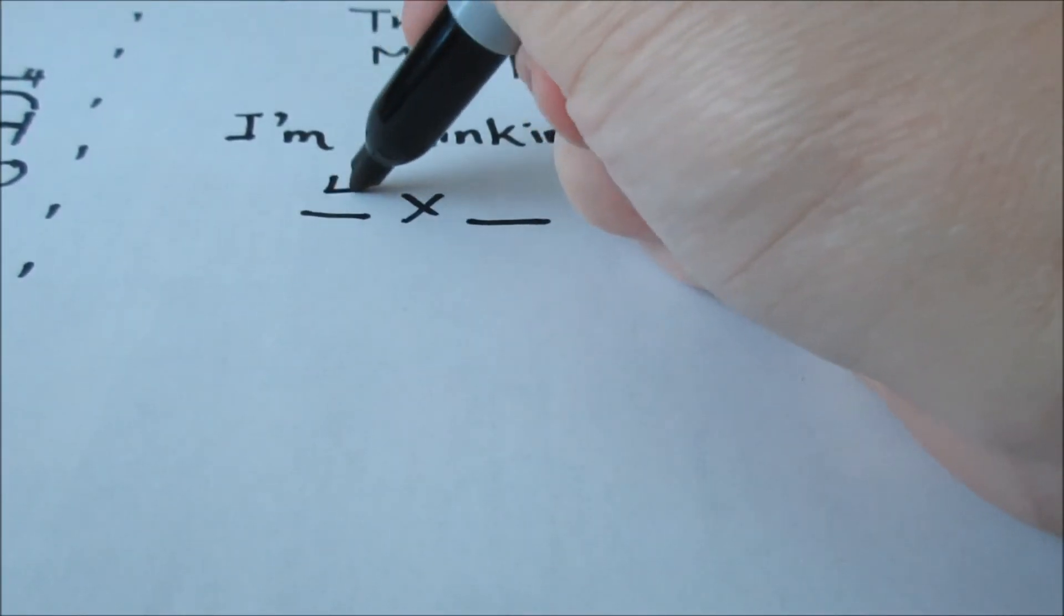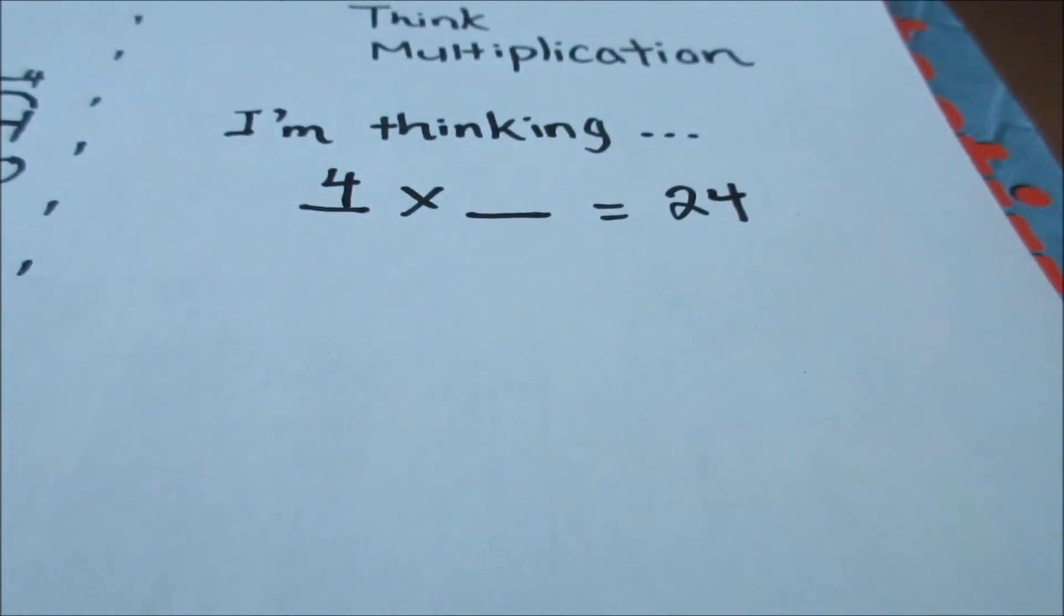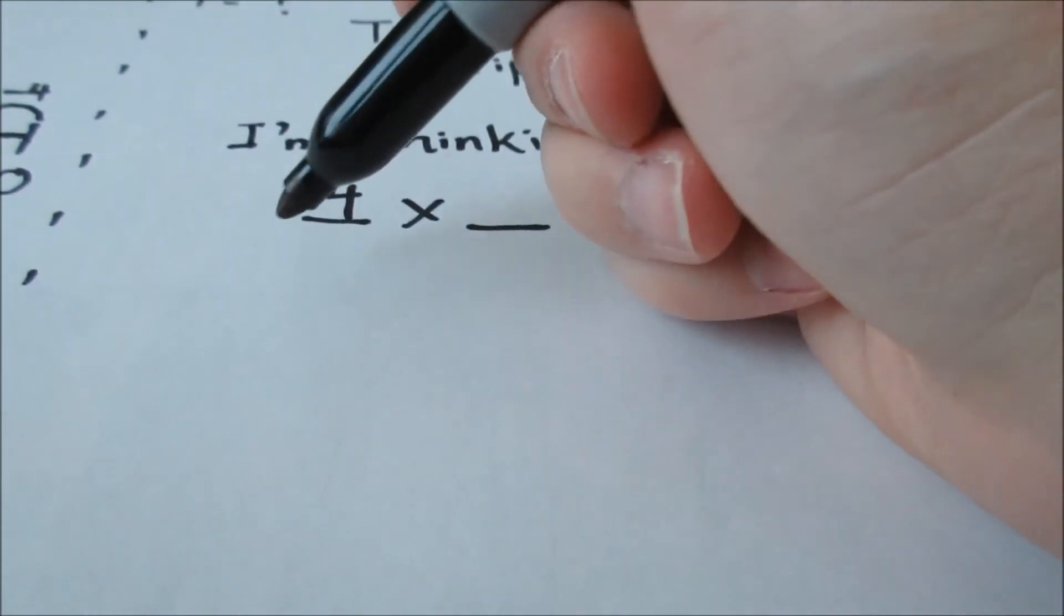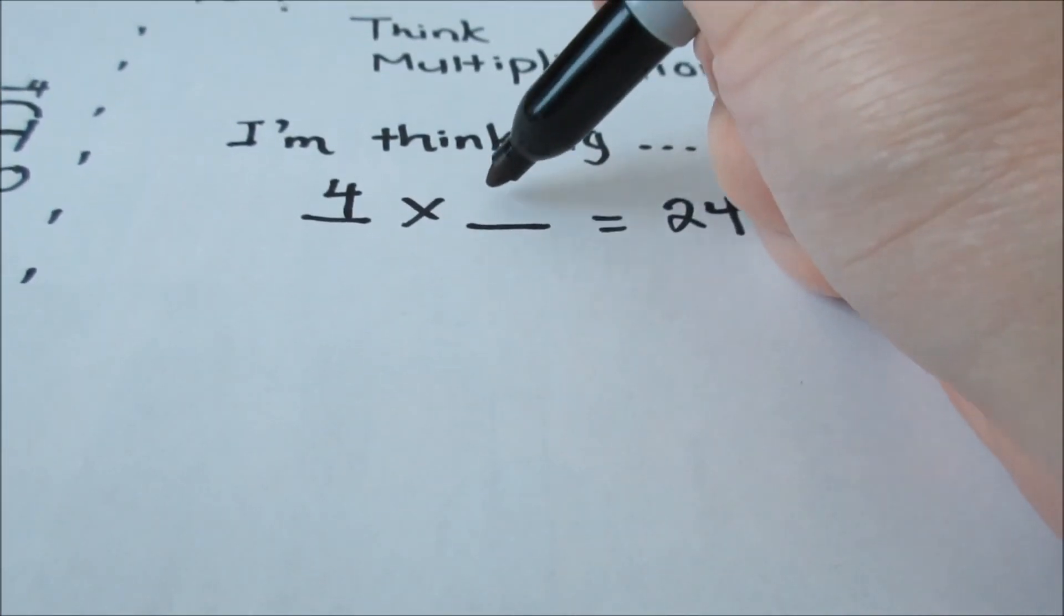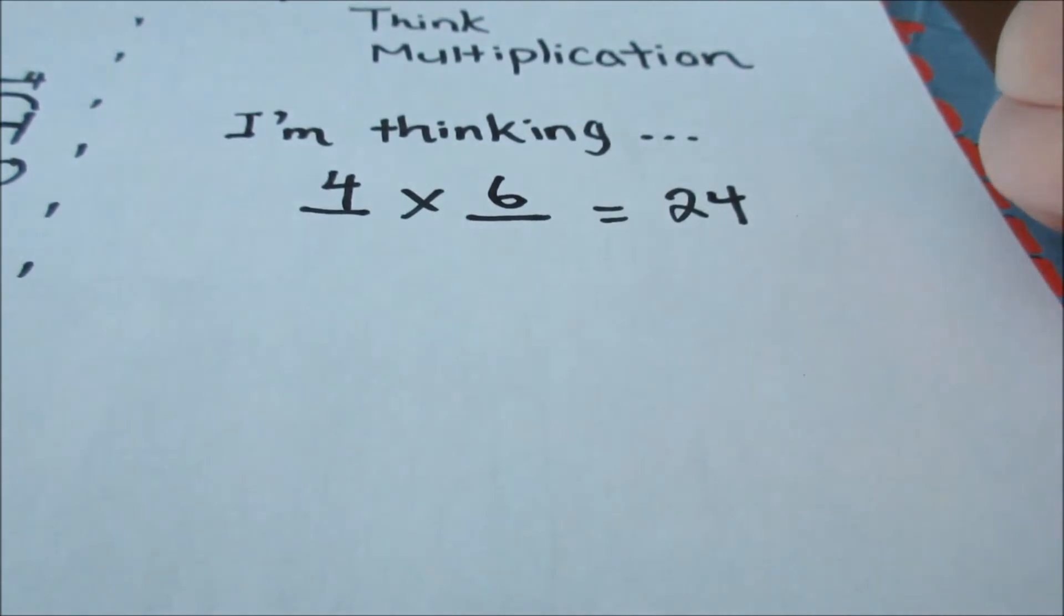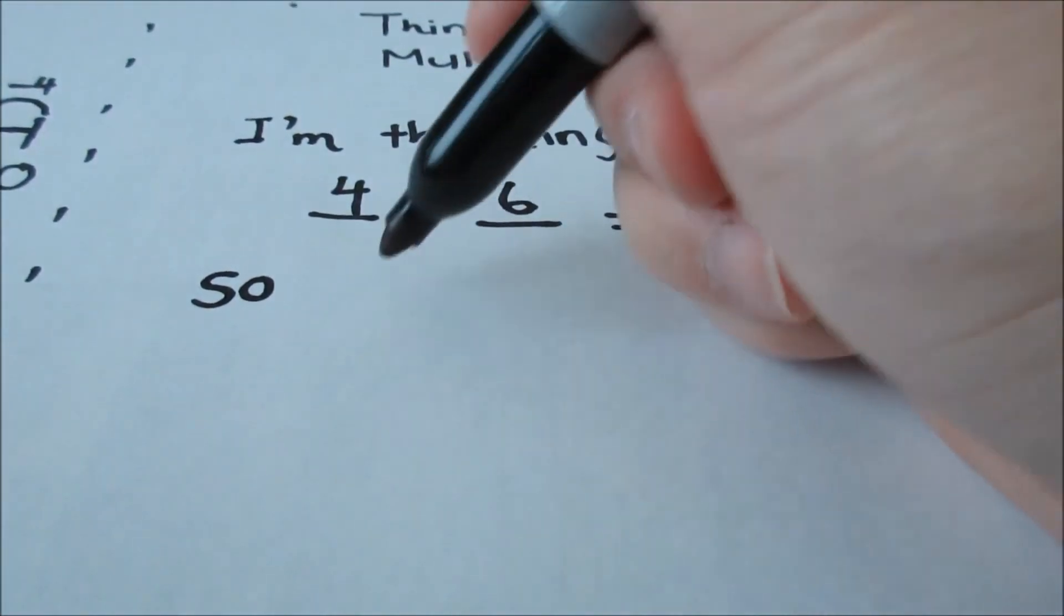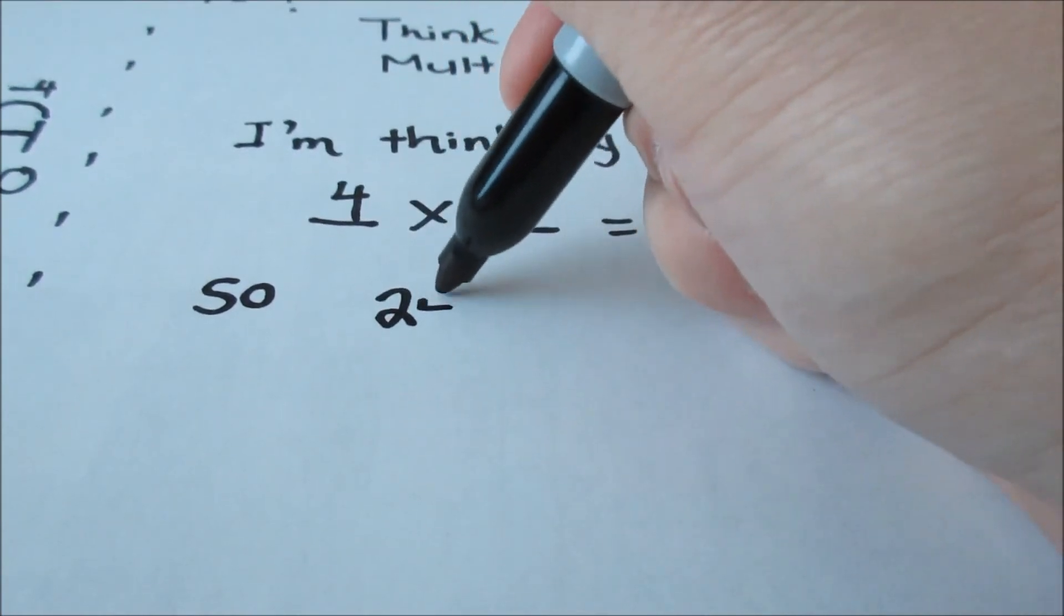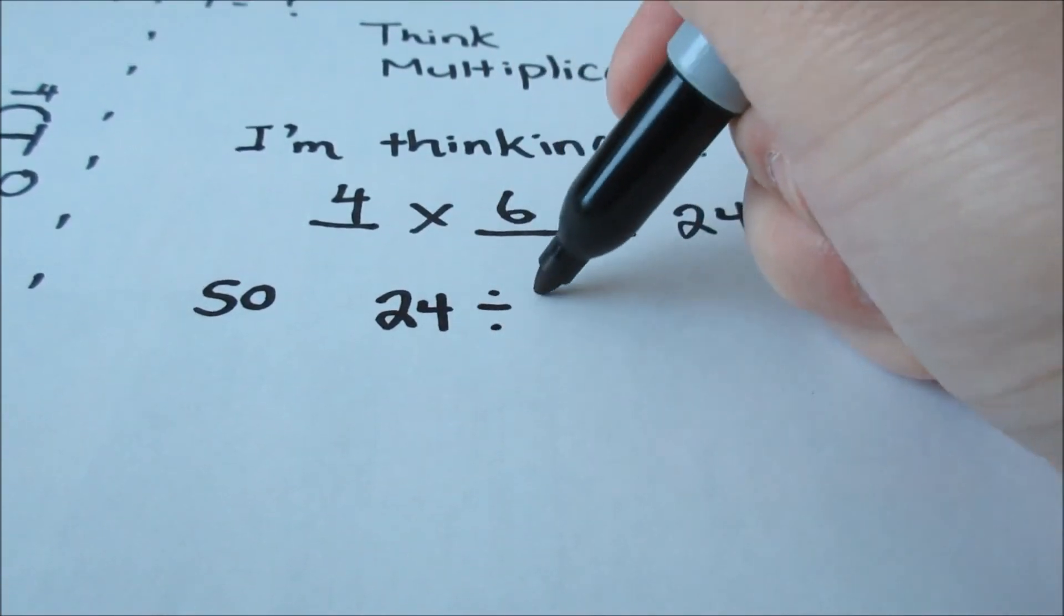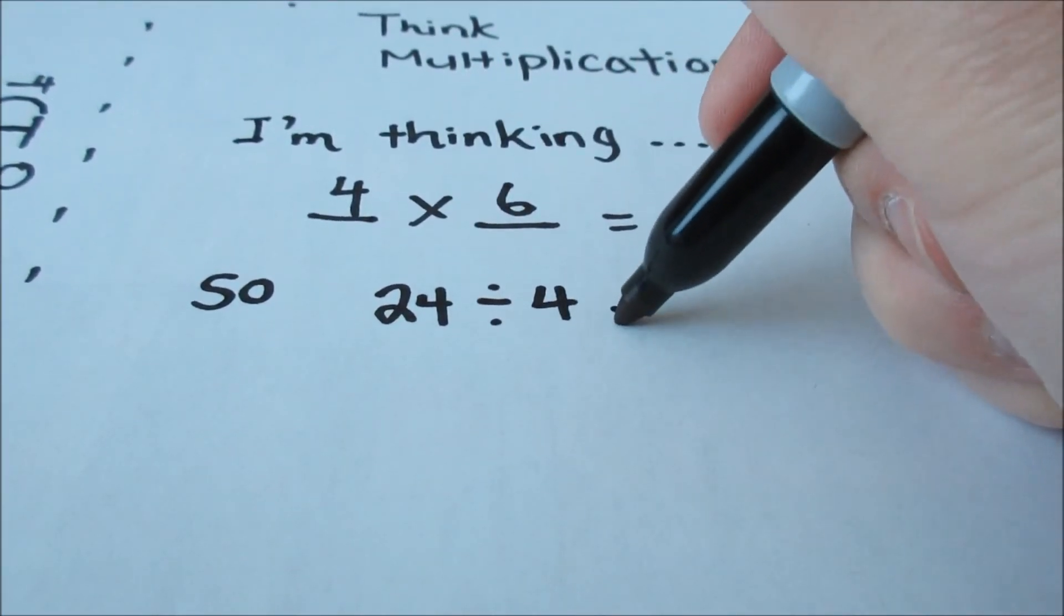So I know that 4 times some number is equal to 24, that number I know is 6. 4 times 6 is equal to 24, so that means 24 divided by 4 is equal to 6, and that's in relation to fact families.